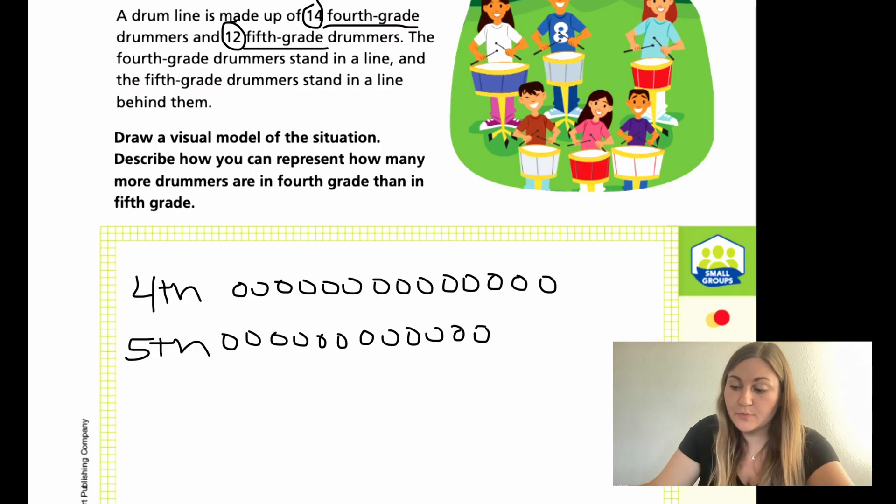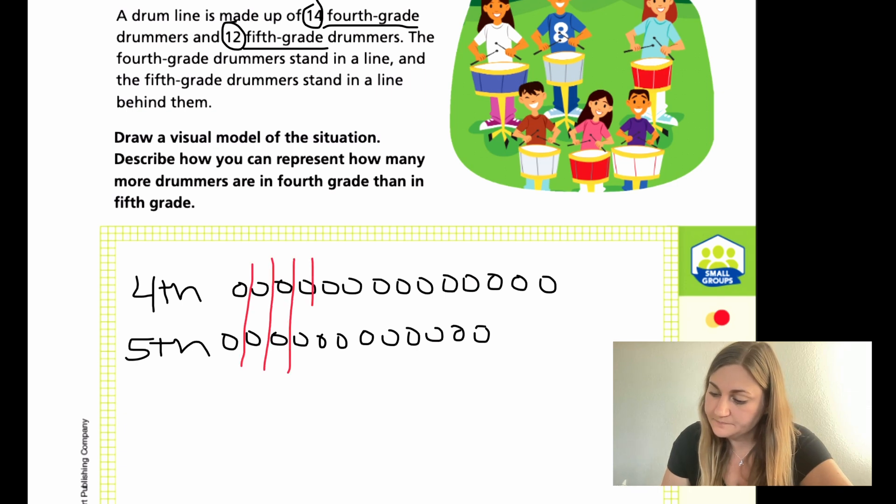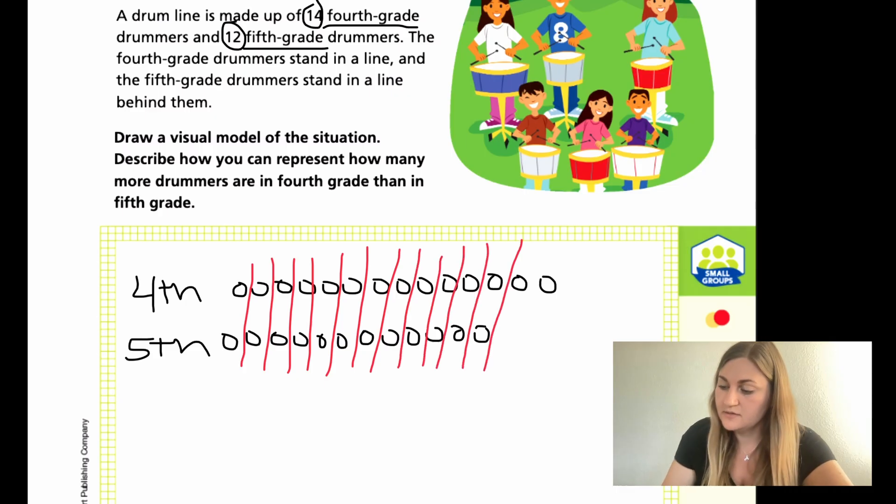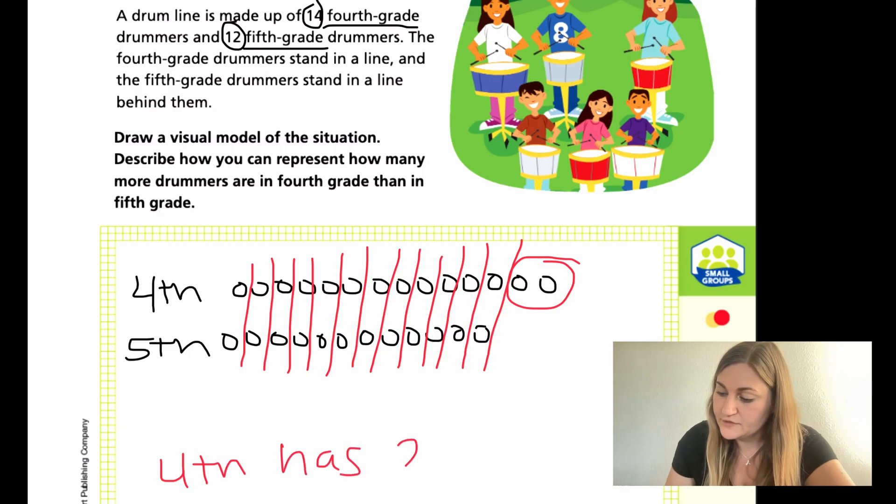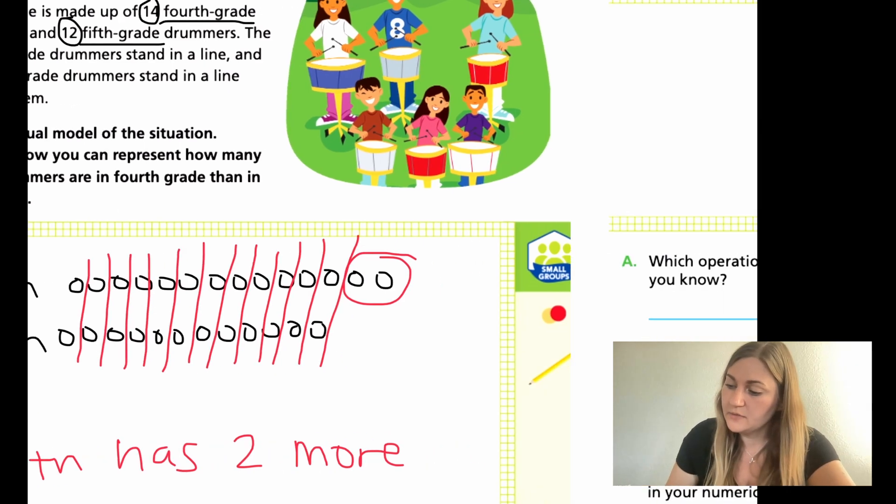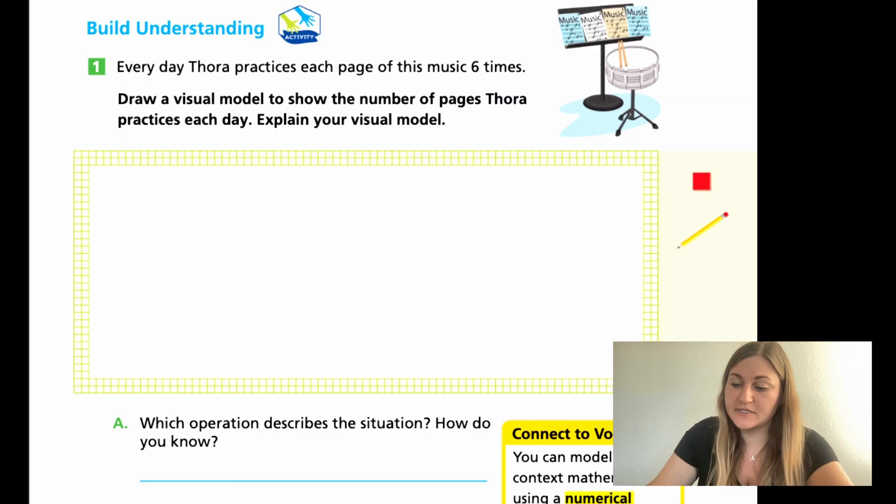Alright, so I drew my visual model, but then it says, describe how you can represent how many more drummers are in 4th grade than in 5th grade. Well, we kind of did that already. So, if we see if the drummers are all lined up in lines here, and then my extras are just going to be off to their own. So, then how many extra students are in 4th grade than 5th grade? Well, we would have 2 extras. So, I want you to write that in your own words in a complete sentence, but right now, I'm just going to write 4th has 2 more. Just to give you a general idea of what we're looking for.